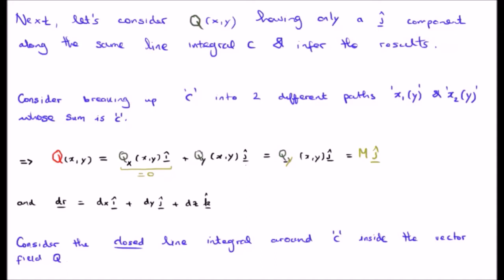dr doesn't change and it's still dx i-hat plus dy j-hat plus dz k-hat, and once again we're going to consider the closed line integral around C inside the vector field Q.